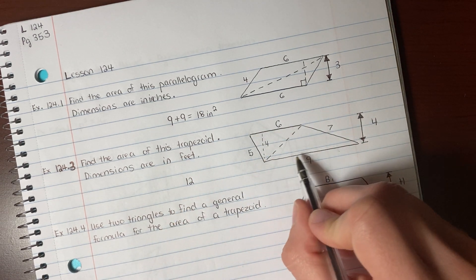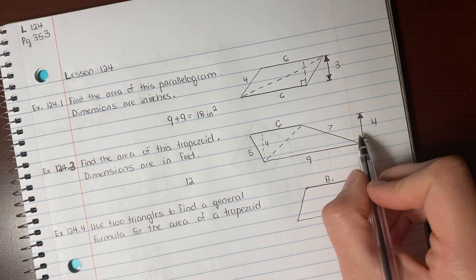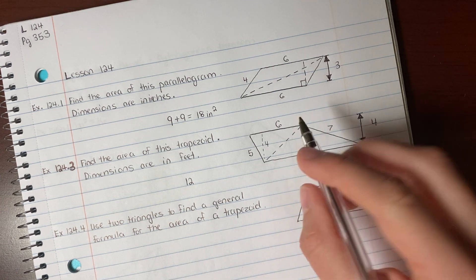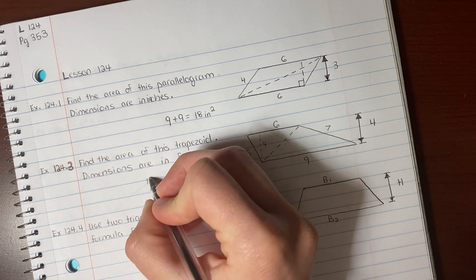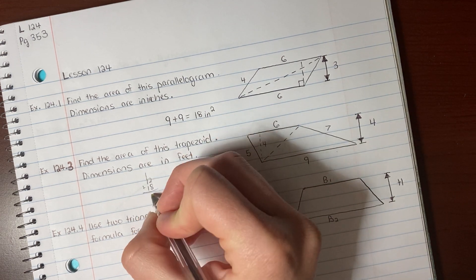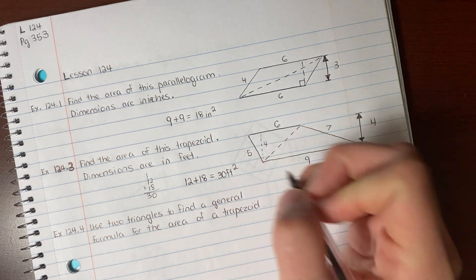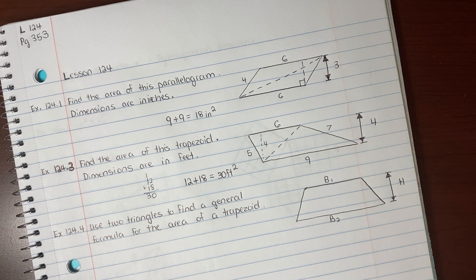And then we have this triangle. 9 is our base times 4, 36. 36 divided by 2, that's going to be 18. So we have 12 plus 18. 12 plus 18, that's going to be 30. So we get 30 feet squared.